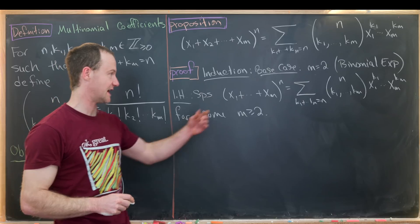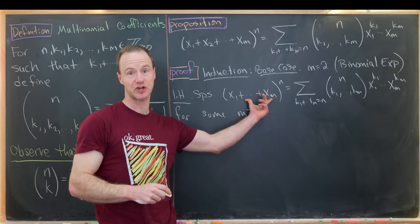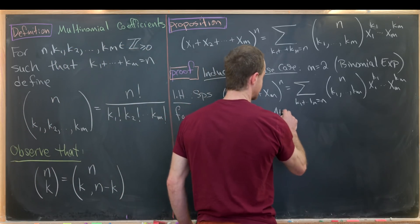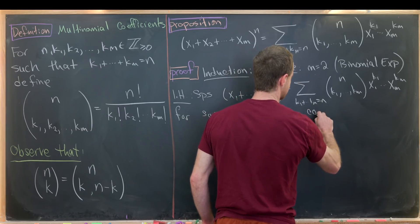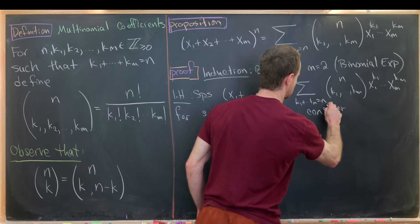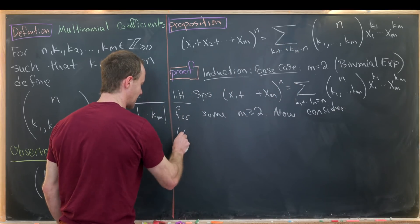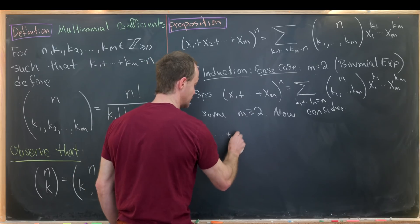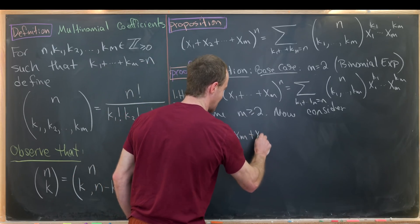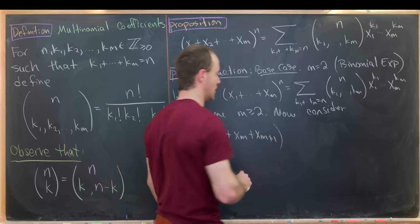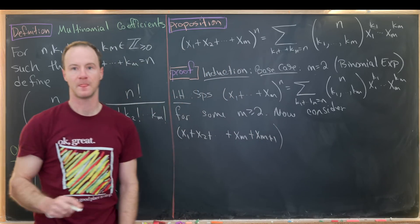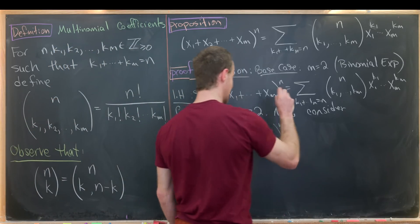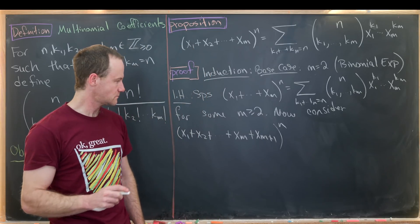From there we want to consider the next case, where we'll have an additional term in this sum. So now we consider x1 plus x2 plus all the way up to xm plus xm+1, to the nth power.